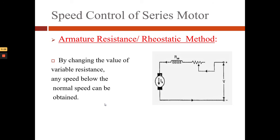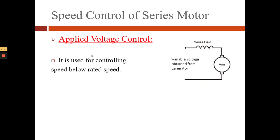Now we will see armature rheostatic control. Due to insertion of the rheostat R in series with the motor, the armature current flows through it and there is a voltage drop of R across it. The voltage across the armature winding reduces and the speed also reduces, because speed is proportional to armature voltage. By changing the value of the variable resistance we can control the speed. This method is used for controlling speed below rated speed.